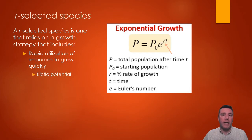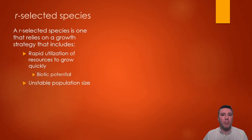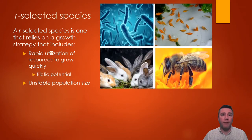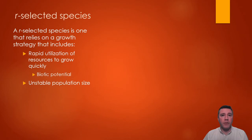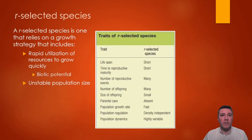Unlike a K-selected species, R-selected species tend to have an unstable population size, and include examples like small fish, small mammals, insects, and bacteria. The characteristic traits of an R-selected species are exactly opposite of those found with a K-selected species.